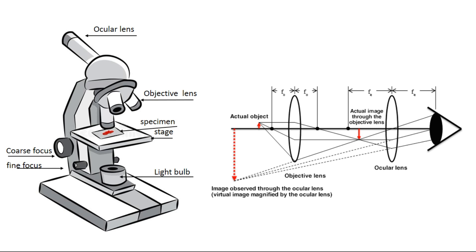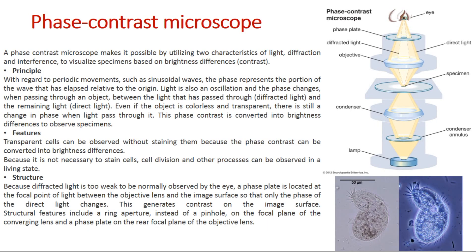In general, a biological microscope mainly consists of an objective lens, ocular lens, lens tube, stage, and reflector. An object placed on the stage is magnified through the objective lens, and when the target is focused, a magnified image can be observed through the ocular lens. In our discipline, we will use bright field, phase contrast, and fluorescence microscopes.